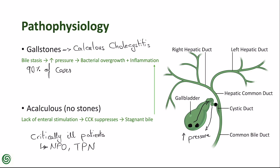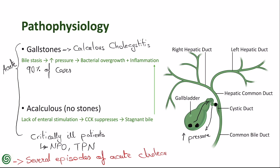Acute cholecystitis is a sudden symptomatic inflammation of the gallbladder, typically triggered by obstruction or infection. Chronic cholecystitis results from repeated episodes of acute inflammation, leading to fibrosis, wall thickening, and eventual functional impairment of the gallbladder.